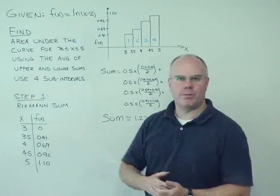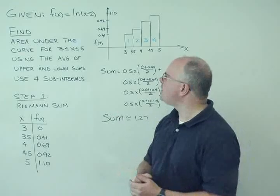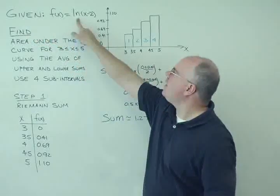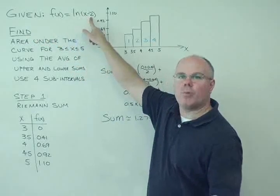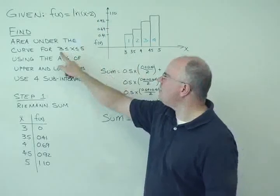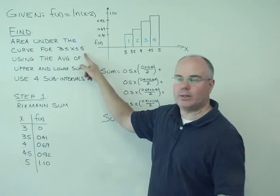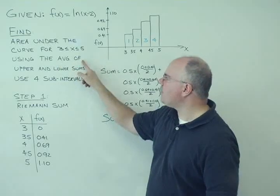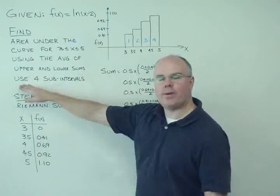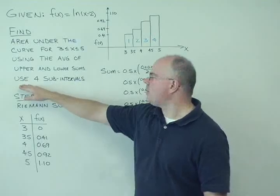We've got another problem for you, and we want to demonstrate that problem. The problem is a follow-on to something we saw in the last segment. Given that lowercase f(x) is equal to ln(x-2), what we want to do now is find the area under the curve between x equals 3 and x equals 5, inclusively, using an average of the upper value and the lower value sum, and divide this interval into four separate parts.